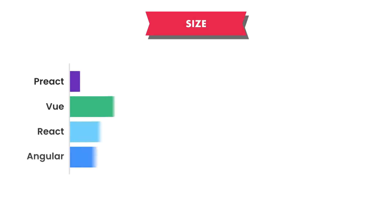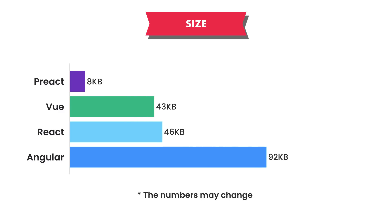The last thing to consider is framework size. All these frameworks are constantly getting optimized, so I don't like to debate this too much. Angular is fairly large compared to React and Vue because it's a full-blown framework — it has everything from routing, templates, testing, and utilities, making it less suitable for lightweight applications. React is a library, so you don't get much out of the box and must use other libraries for routing and state management, keeping it small and lightweight. Vue is even smaller and also suitable for lightweight applications. If you need an extremely lightweight option, Preact is smaller than Vue and is basically React with some features stripped out.